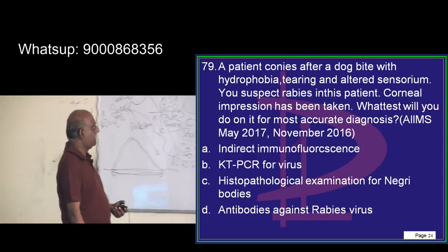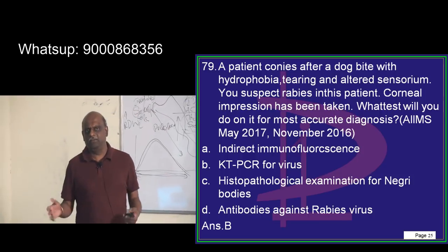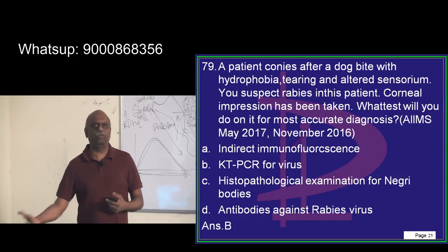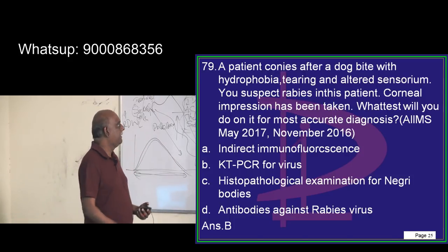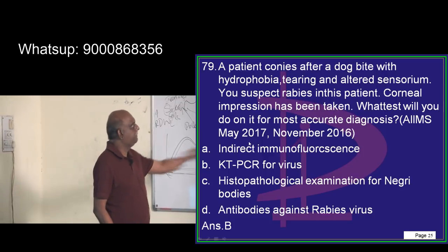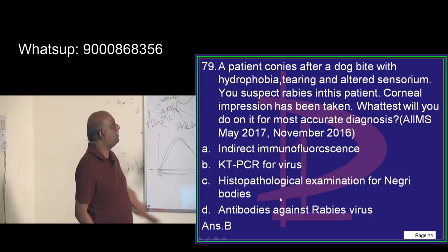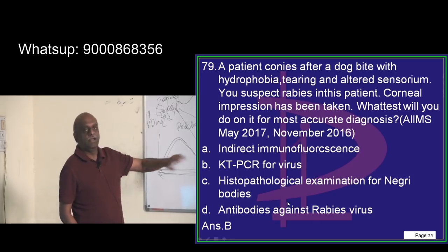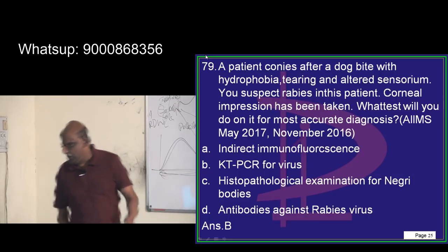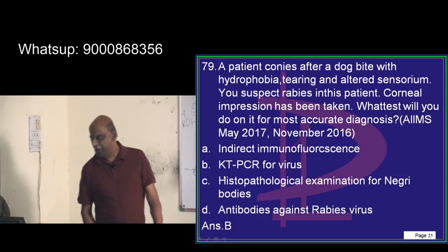Even if you go to FMG, it is the same interchangeable question bank between one examiner and another. So for rabies diagnosis, RT-PCR for the virus is the most reliable way by which you can make the diagnosis — that is what you need to remember.